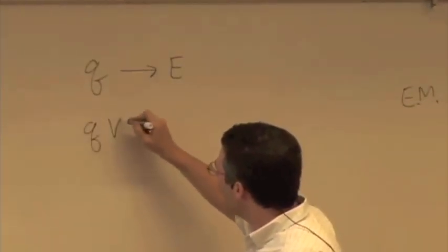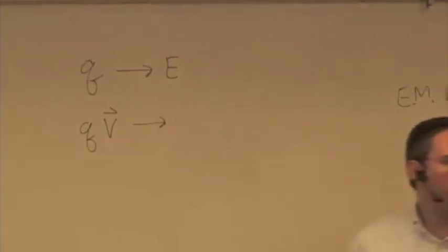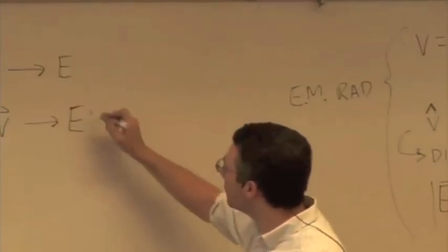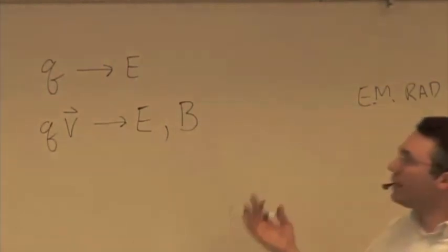If the charge is moving, so we say Q times the velocity, if we have a moving charge, that makes what? Electric and magnetic fields, right? It doesn't stop making electric fields just because it moves, but we also have B, right? So we know how to calculate those things.